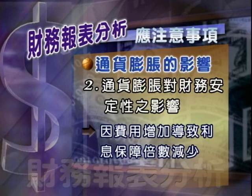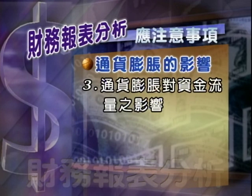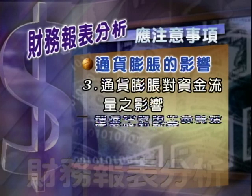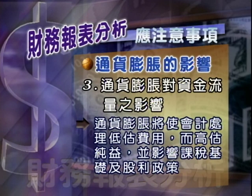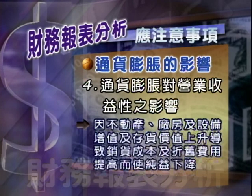通货膨胀对流动性的影响：存货增加会改善流动比率及变现能力；通货膨胀也会增进短期偿债能力。通货膨胀对财务安定性的影响：费用增加会导致利息保障倍数减少；不动产厂房及设备增值以及存货价值上升，会导致资本结构改善。通货膨胀对资金流量的影响：会使会计处理低估费用、高估损益，并影响课税基础及股利政策。